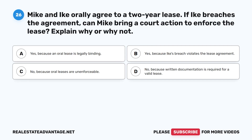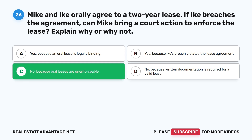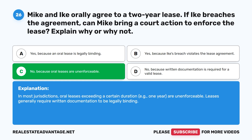Question 26: Mike and Ike orally agree to a two-year lease. If Ike breaches the agreement, can Mike bring a court action to enforce the lease? A. Yes, because an oral lease is legally binding. B. Yes, because Ike's breach violates the lease agreement. C. No, because oral leases are unenforceable. D. No, because written documentation is required for a valid lease. The correct answer is C: No, because oral leases are unenforceable. In most jurisdictions, oral leases exceeding a certain duration, for example one year, are unenforceable. Leases generally require written documentation to be legally binding.